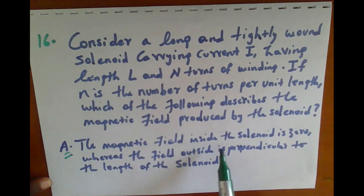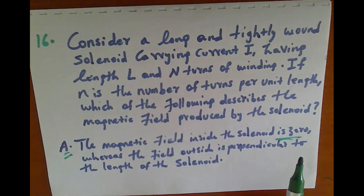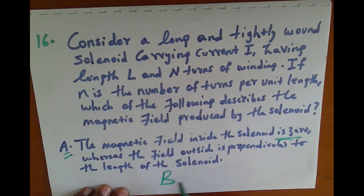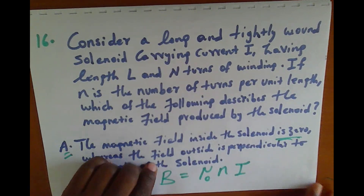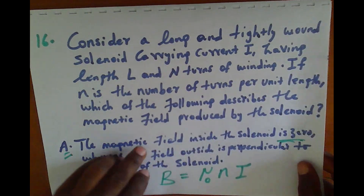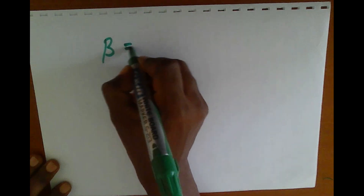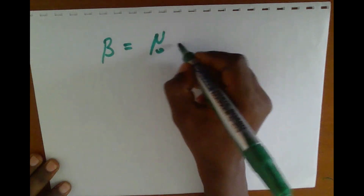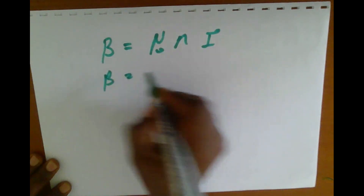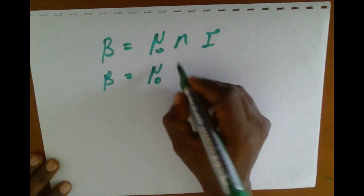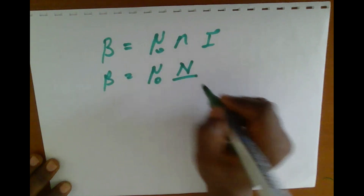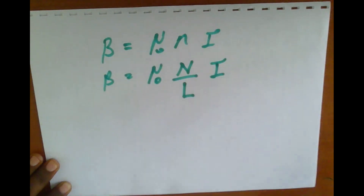Option A states the magnetic field inside the solenoid is zero. As can be seen from the formula, the magnetic field B is equal to the permeability of free space multiplied by n, the number of turns per unit length, times the current I.